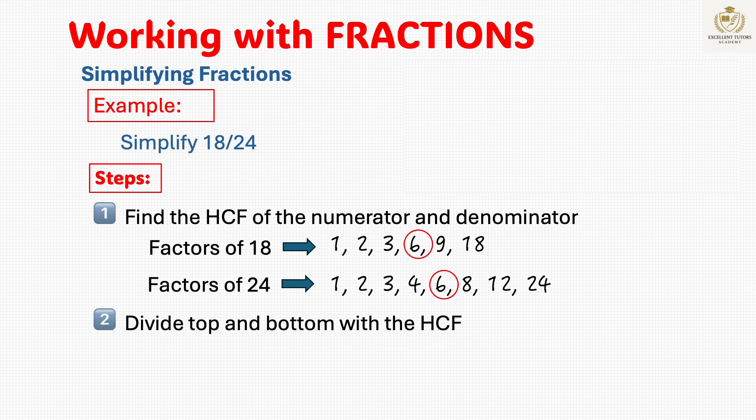Step 2: Divide both by the HCF. 18 divided by 6 equals 3. 24 divided by 6 equals 4. So 18 over 24 simplifies to 3 over 4. Always check if a fraction can be simplified.